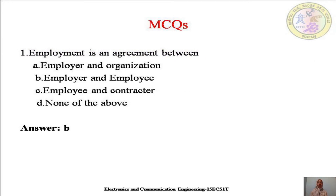Now let's see some multiple choice questions related to employment. The first question: Employment is an agreement between — A. employer and organization, B. employer and employee, C. employee and contractor, or D. none of the above. The right answer is B — employer and employee. This was discussed in the beginning of the session: employment is an agreement between two parties, that is employer and employee.